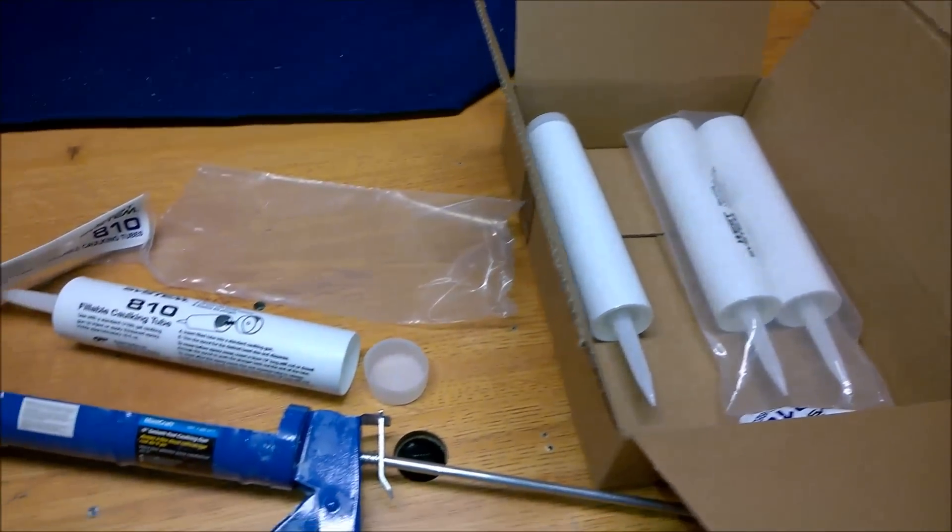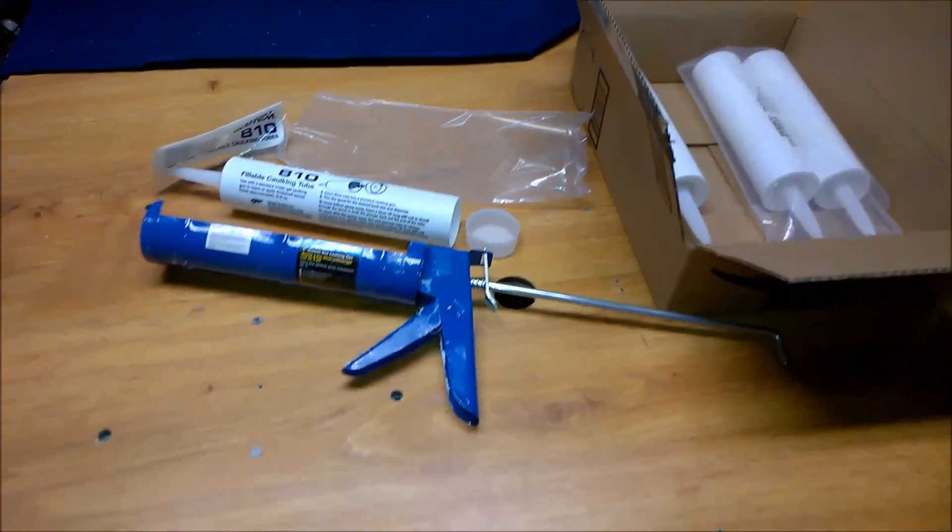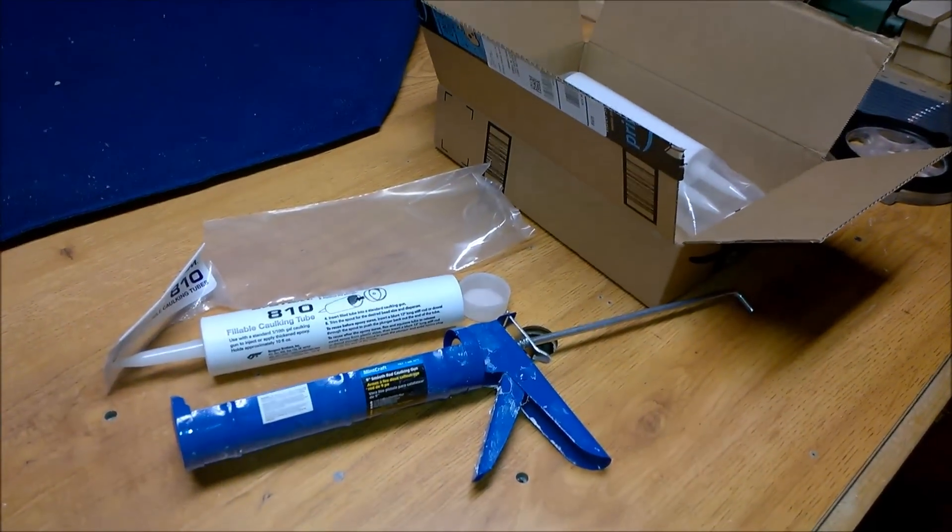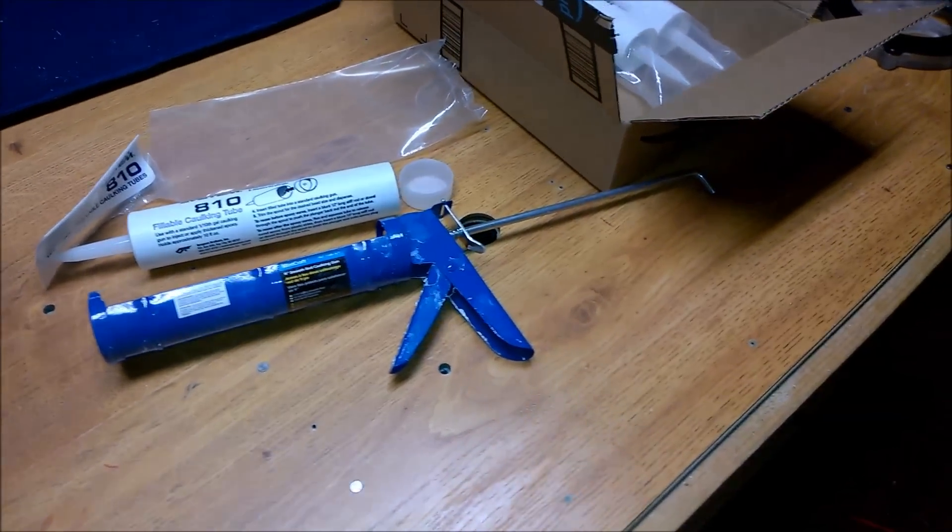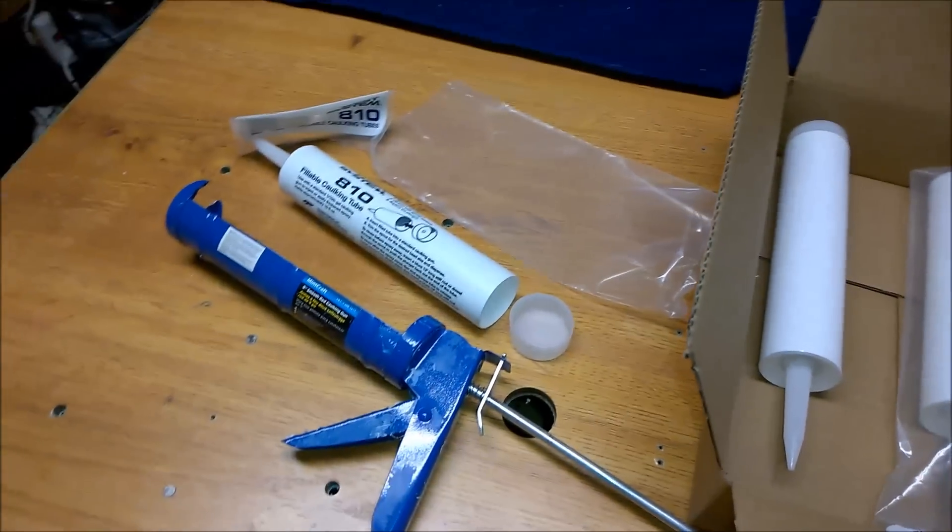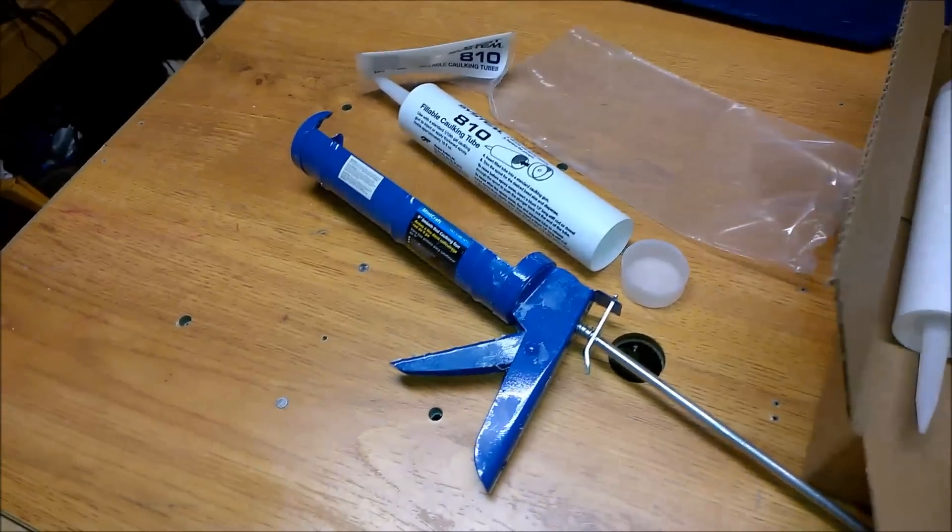Moving on today to more epoxy work with the second fillets inside of the mini boat. I've been using Ziploc bags, cutting off the corner, and it works reasonably well for most of the seams, but there are some spots inside of the bulkheads that I can't quite get to.